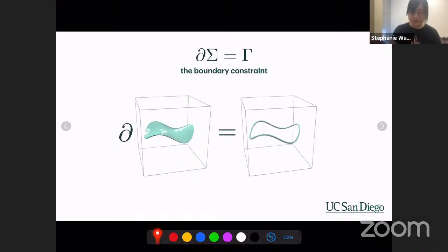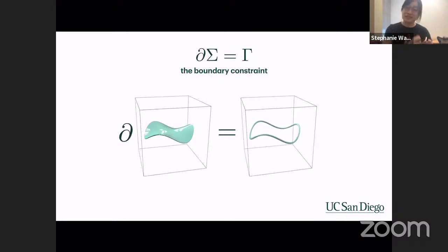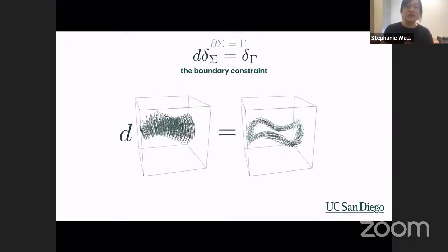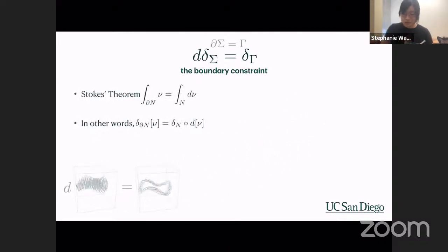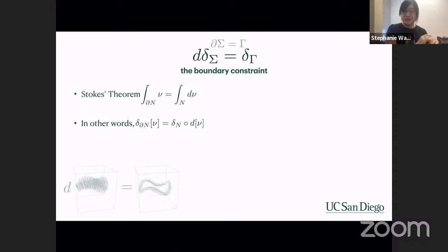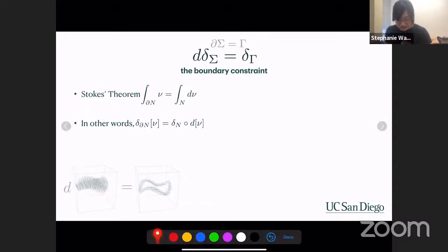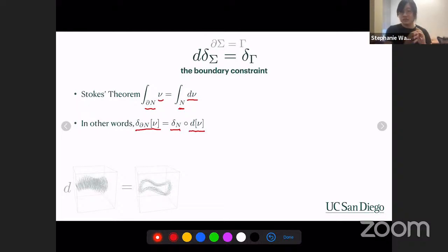We have the constraint that the boundary of sigma must equal the given curve gamma. We claim this is the same as saying the exterior derivative of delta_sigma equals delta_gamma. By Stokes' theorem, taking the boundary of some geometry and acting it on nu is the same as taking the entirety acting on d nu. So there is a connection between taking the boundary of a geometry and the exterior derivative of differential forms. Using weak derivatives — defined such that the integration by parts formula is satisfied — we can transfer derivatives from eta to omega in the integral.